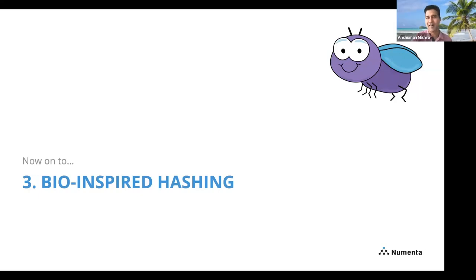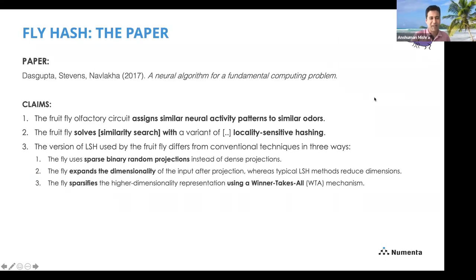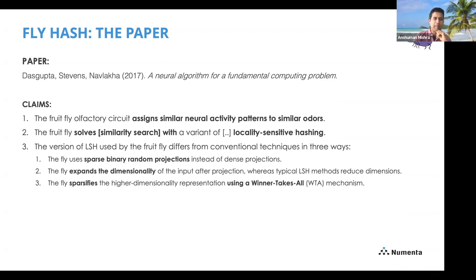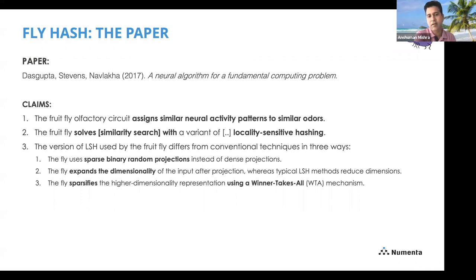I'm going to talk about fruit flies. This was basically the paper that started it all — published in Science. Dasgupta, Stevens, and Navlakha made a bunch of claims: the fruit fly olfactory circuit solves similarity search and does so with a kind of locality-sensitive hashing. The way it does it is different from vanilla LSH: it uses sparse binary projections, it expands the dimensionality instead of reducing it, and it uses a winner-takes-all mechanism to sparsify the representation.